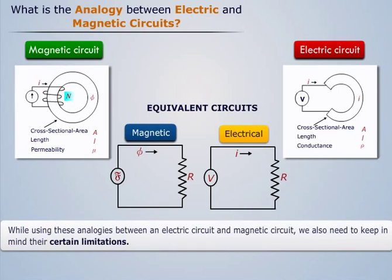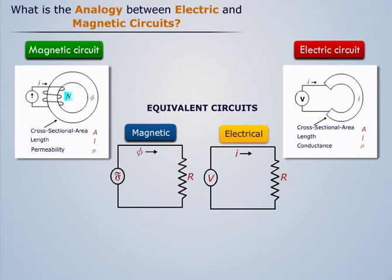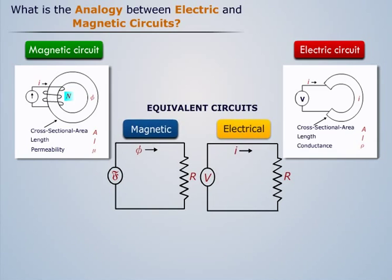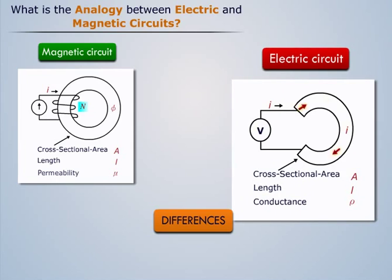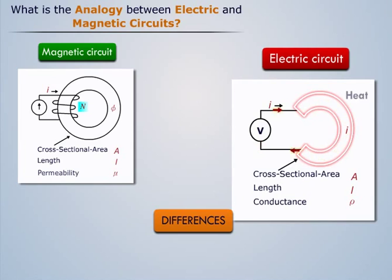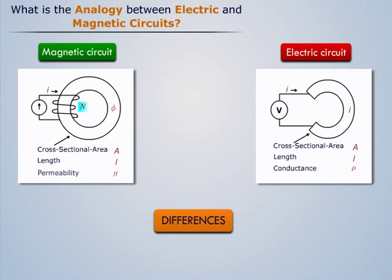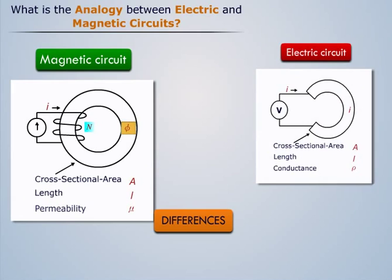While using these analogies between an electric circuit and magnetic circuit, we also need to keep in mind there are certain limitations. Electric current represents the flow of electrons and carries power, which gets dissipated as heat in resistances. Whereas a magnetic field doesn't represent the flow of anything, and no power gets dissipated in reluctances.